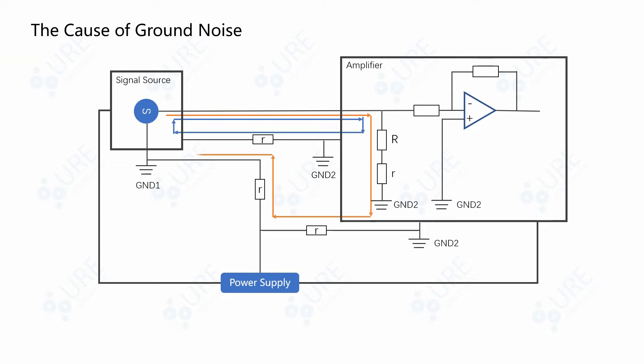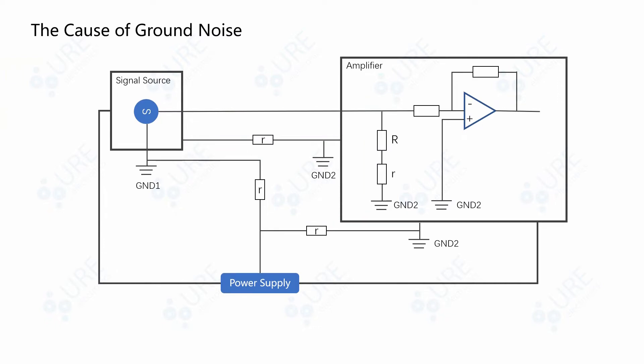There will be several signal loops and ground loops formed in the audio system when using single ended input. Since the audio signal is changing, the current will change as a result. In addition, there will be different current from different loops going through one ground wire and all of them are changing with time.